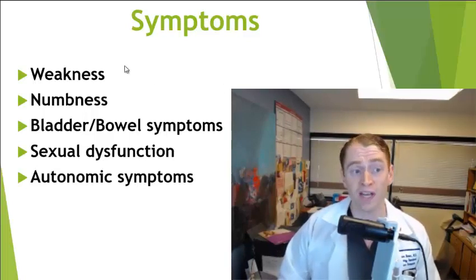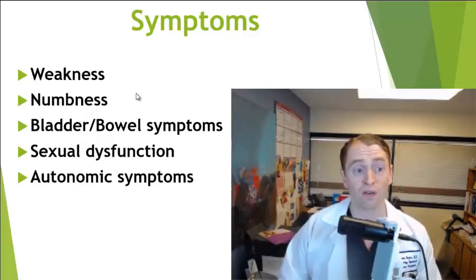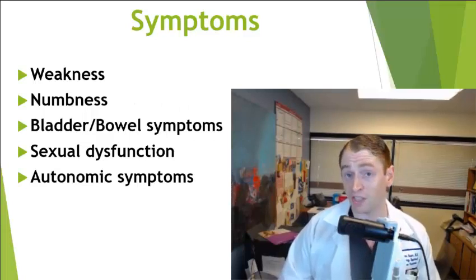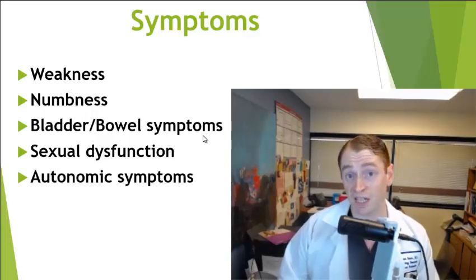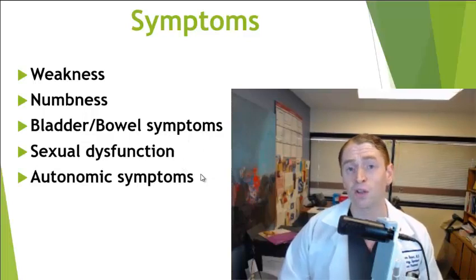The common symptoms are weakness of the limbs, numbness of the limbs or trunk below the level of the lesion. Bladder symptoms are very common such as urinary frequency or urinary hesitancy. Sexual problems such as erectile dysfunction are common, along with autonomic symptoms, though they are often unrecognized.